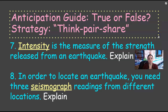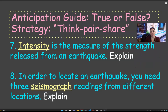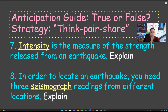Once you write this down, please flip over to the anticipation guide. Remember, you're writing on the left-hand side to start — the one that says 'before.' True or false: Number seven, intensity is the measure of the strength released from the earthquake. Number eight, in order to locate an earthquake, you need three seismograph readings from different locations. True or false?